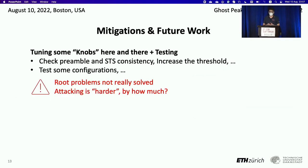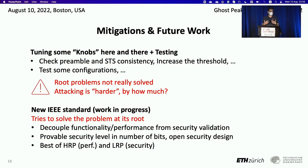In the future, we want to mitigate these attacks. There are some possibilities like trying to increase thresholds and add some checks to test the devices, but all these solutions do not solve the root problems and there is no way to formally quantify how much harder they make the attack. The real solution is to work towards a new standard where we decouple functionality from performance and achieve a provable security level with an open security design, combining the best performance of HRP and the security of the LRP mode.